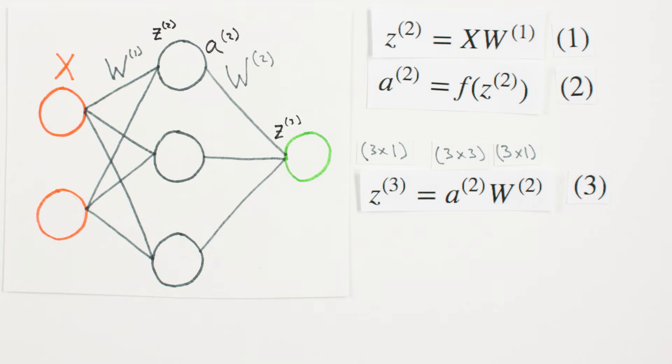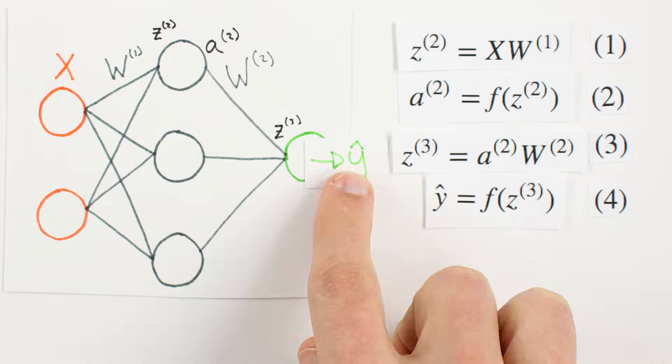Z3 has three activity values, one for each example. Last but not least, we'll apply our activation function to Z3, yielding our official estimate of your test score, y-hat.